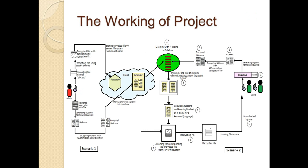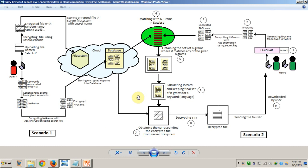Let's see the working of the project. Consider the first scenario where an administrator wants to upload a file to the cloud along with keywords associated with the file. Suppose the admin uploads a file named abc.txt — we will use Base64 encoding to encrypt the file and store it onto the file system. Then we create a secret key, and from the keywords associated with the file we will generate n-grams. These n-grams will be encrypted using the secret key and stored onto the database in the cloud server.